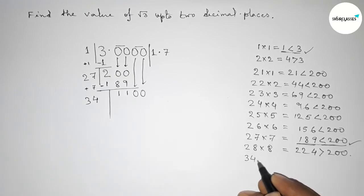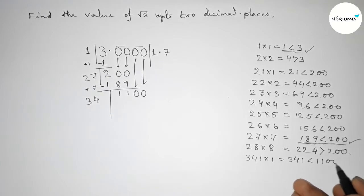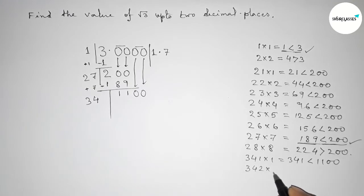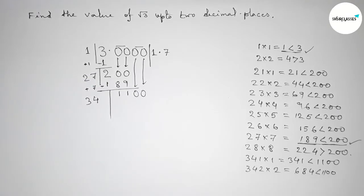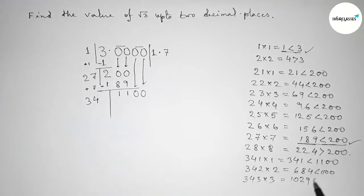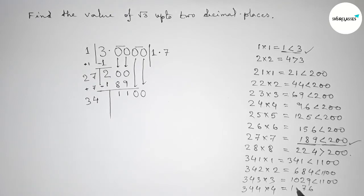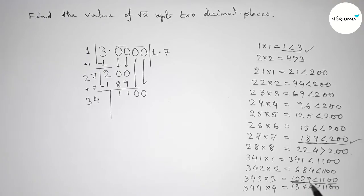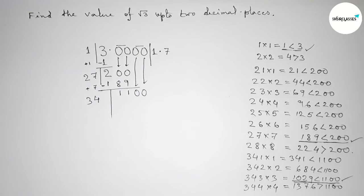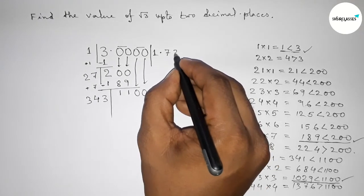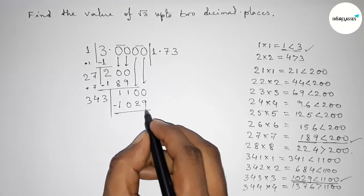By similar process, take a number beside 34. If you put 1: 341×1 = 341, less than 1100. If you put 2: 342×2 = 684, less than 1100. If you put 3: 343×3 = 1029, less than 1100. If you put 4: 344×4 = 1376, which is greater than 1100. So we take 3, since 1029 is almost near and less than 1100. Write down 1029.